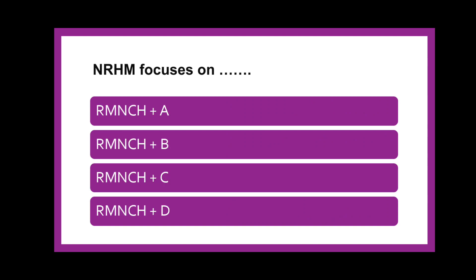The next question is: NRHM focuses on dash — whether RMNCH+A, RMNCH+B, RMNCH+C, or RMNCH+D? The National Rural Health Mission focuses on various aspects: reproductive care, maternal care, neonatal care, child health care, plus adolescent care. So all these alphabets stand for RMNCH+A — that is Reproductive, Maternal, Neonatal, Child Health, and Adolescent care.